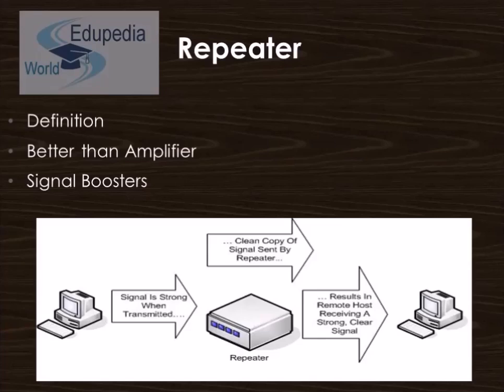Repeaters are scalable and available, unlike amplifiers which re-strengthen the signal but also amplify the noise along with the information, where any unwanted signal in the information is called noise. They were introduced in wired data communication networks due to the limitation of a signal propagating over a long distance, but now are a common installation in wireless networks as well for expanding the cell size.